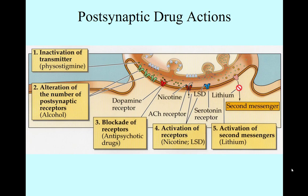Number five is activation of second messenger systems. This gets a little complicated: you have an initial neurotransmitter that binds, creating a cascade effect of enzymatic activity that produces some sort of EPSP or IPSP, or even stimulates activity within the nucleus. Lithium is the classic example — it's used to control bipolar disorder and is believed to affect the second messenger cascade. So those are five different examples of how drugs can act at the post-synaptic level.